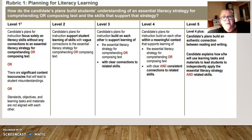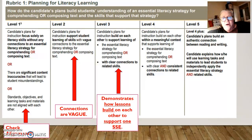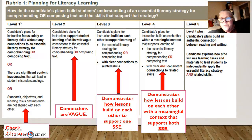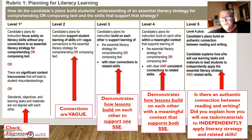The same thing applies to rubric one for literacy. Check for alignment, make sure your connections aren't vague but are clear. Show how lessons build on each other to support one SSE for a three, to support both SSE for a four, and then to have students independently apply their literacy strategy and related skills for a five. I suggest you take time now to write prompt 1C, stop the recording, write it, then compare it with the rubric level progressions looking at all of prompt one now that you've written A, B, and C. After that, come back and we'll talk about prompt two.